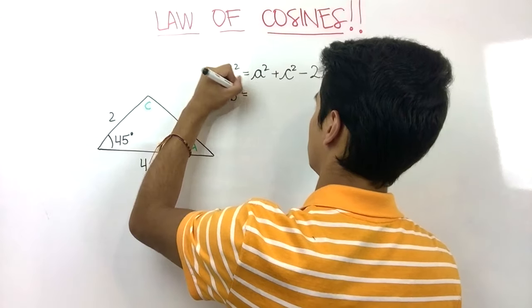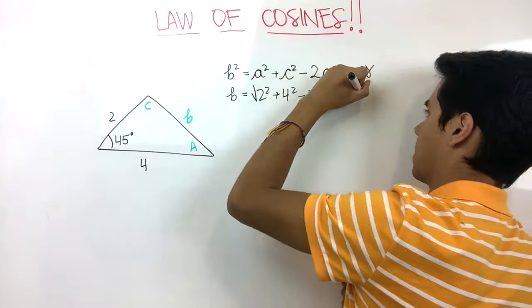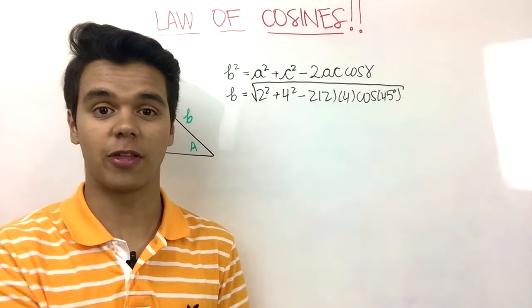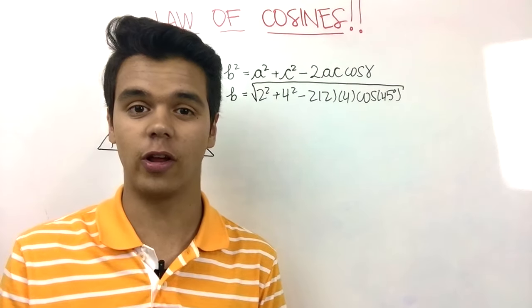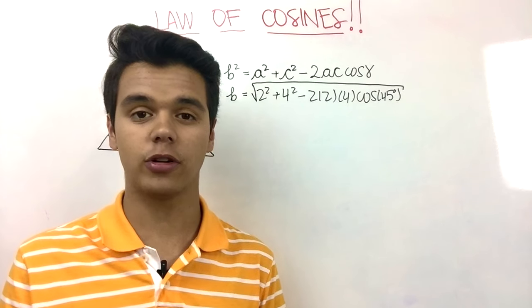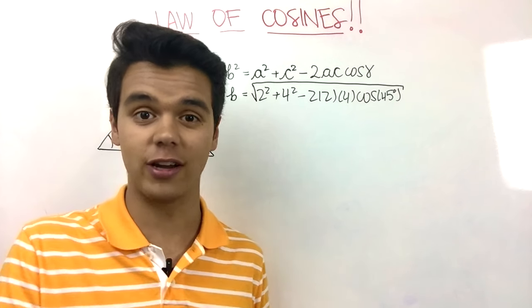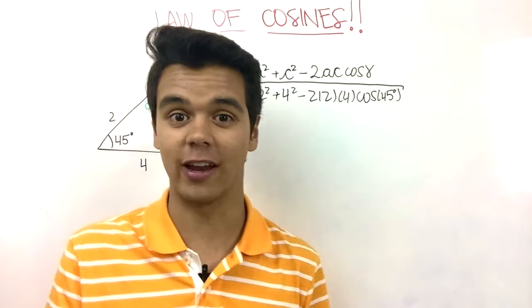So B is equal to the square root of... If you're using your calculator, before you punch in your numbers, please don't forget to set it in degrees because we have degrees here.